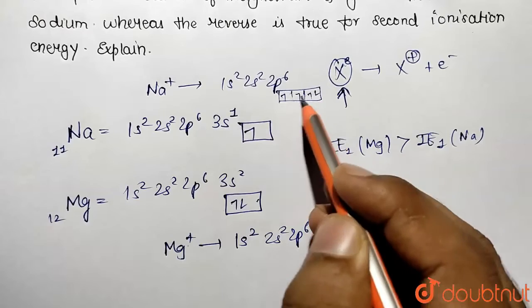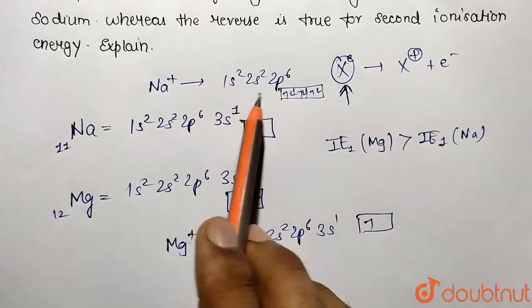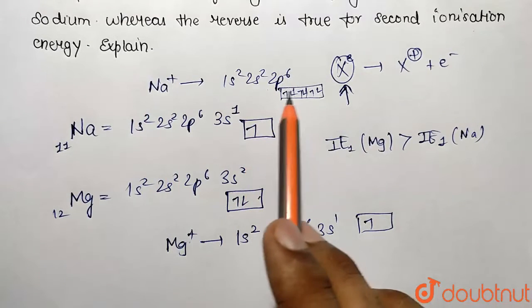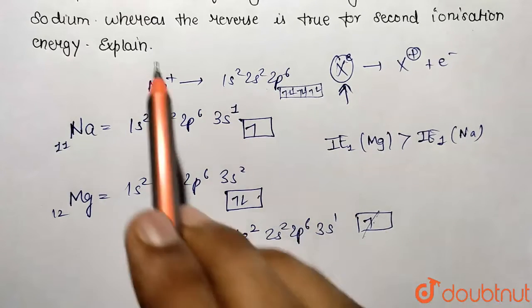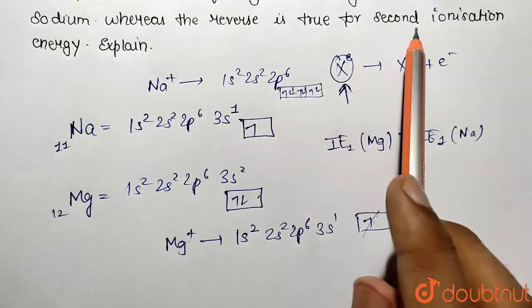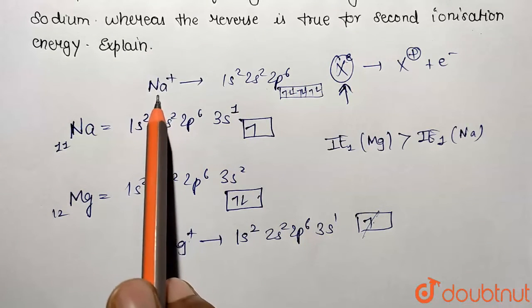Now what they are telling, it is having one electron in s and this p is already fulfilled by 6 electrons. So this statement says correct, sodium is going to have higher value of second ionization because of fulfilled p orbital configuration, p sub shell configuration. Here it can easily remove this one. So this statement verifies whereas the reverse is true for second ionization energy.